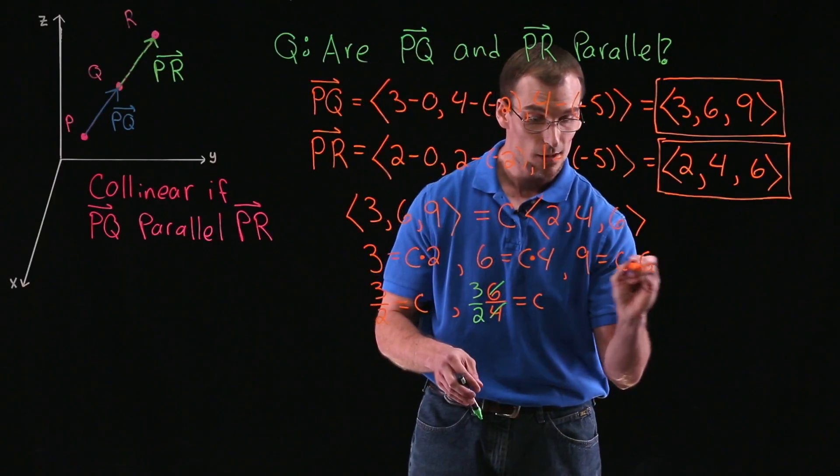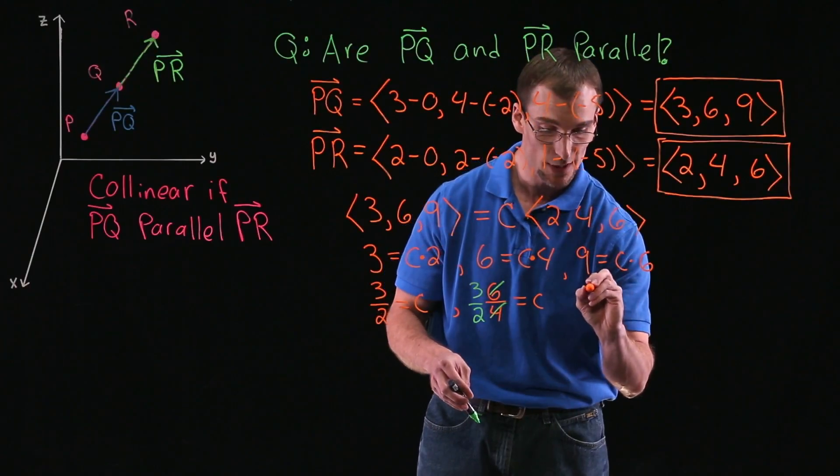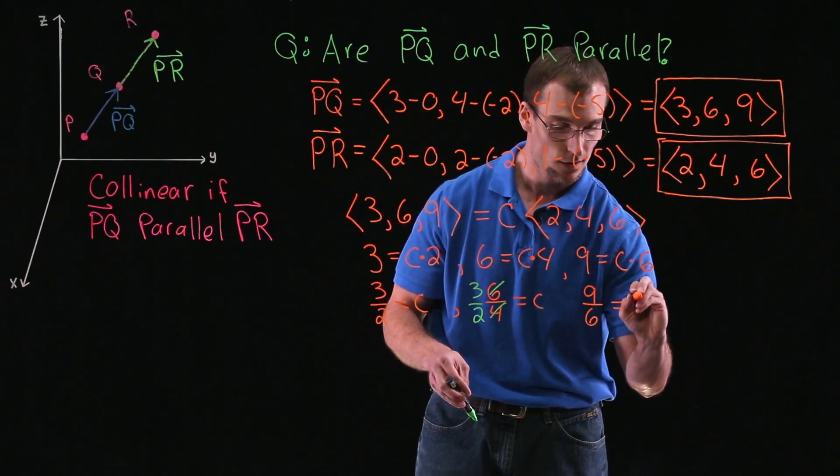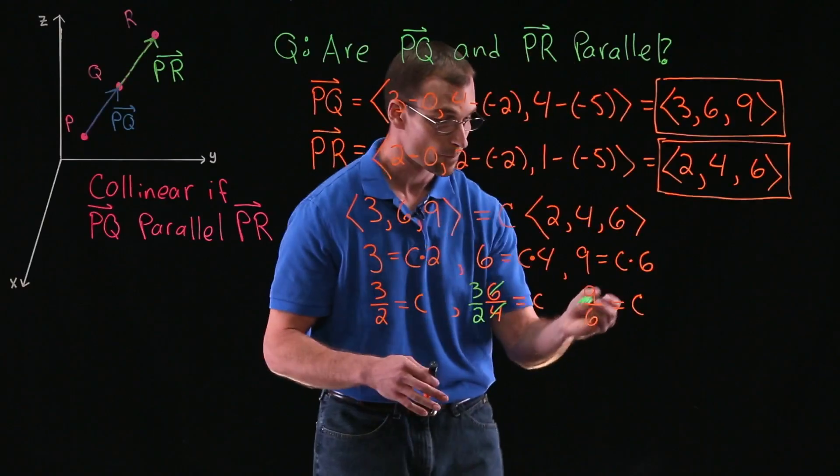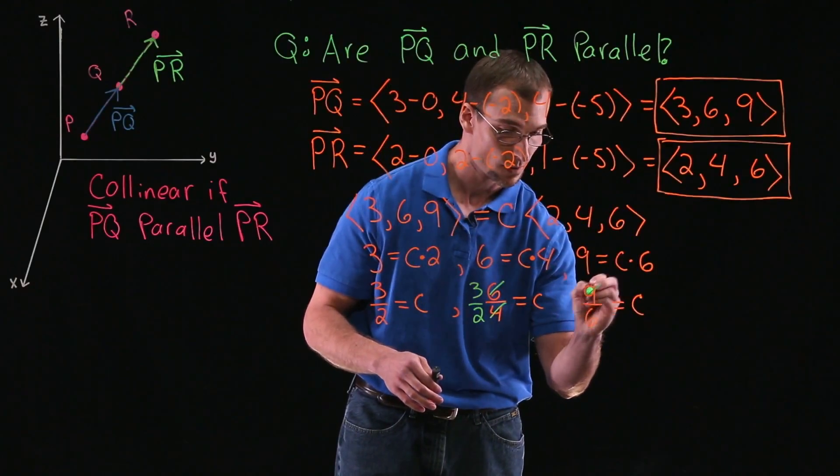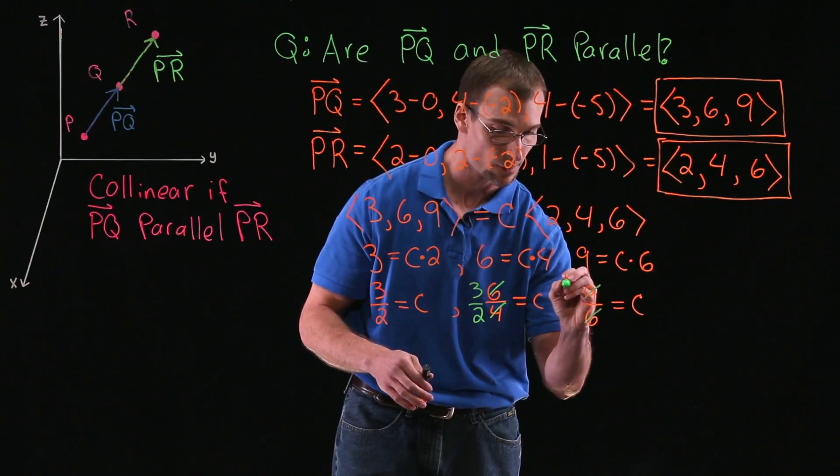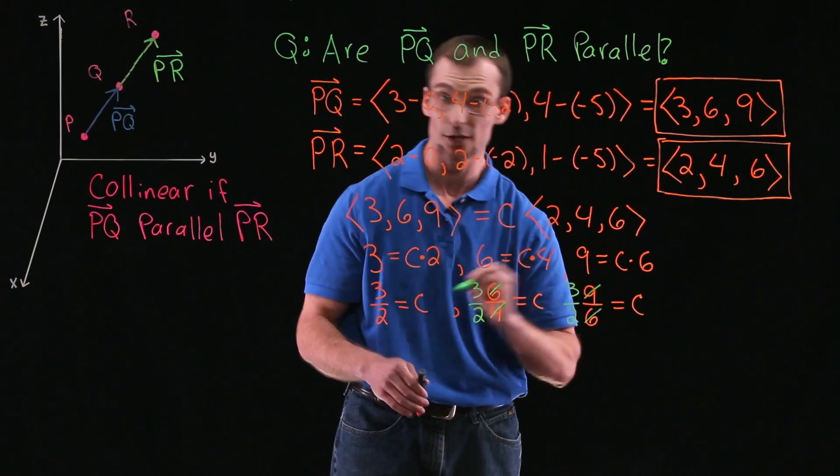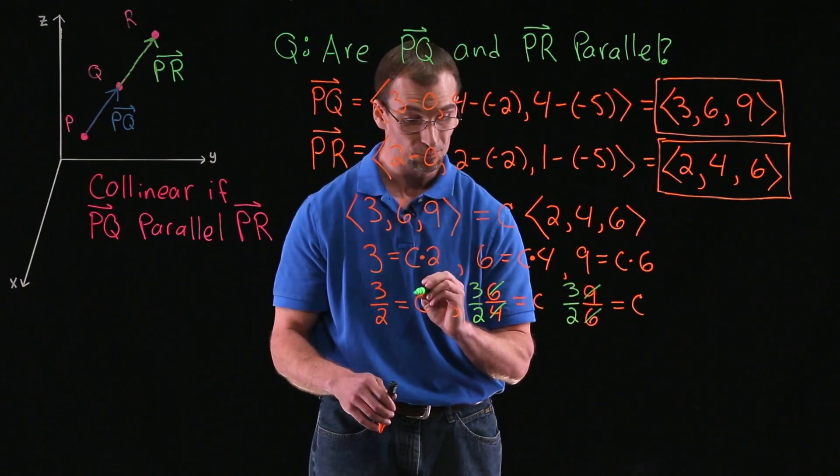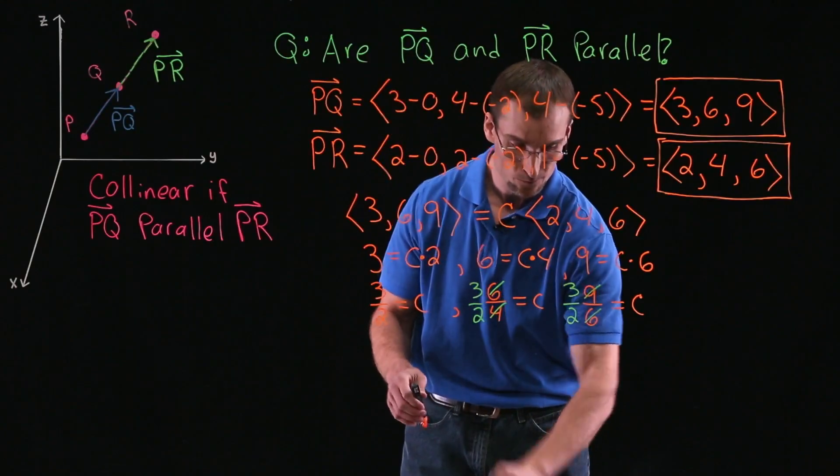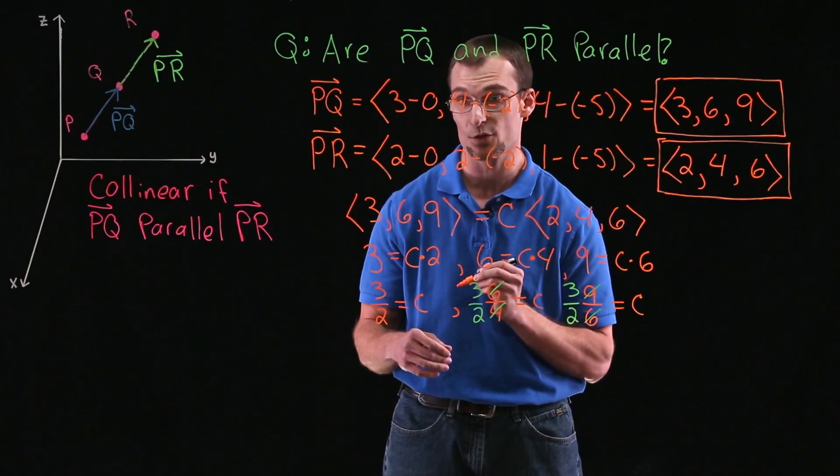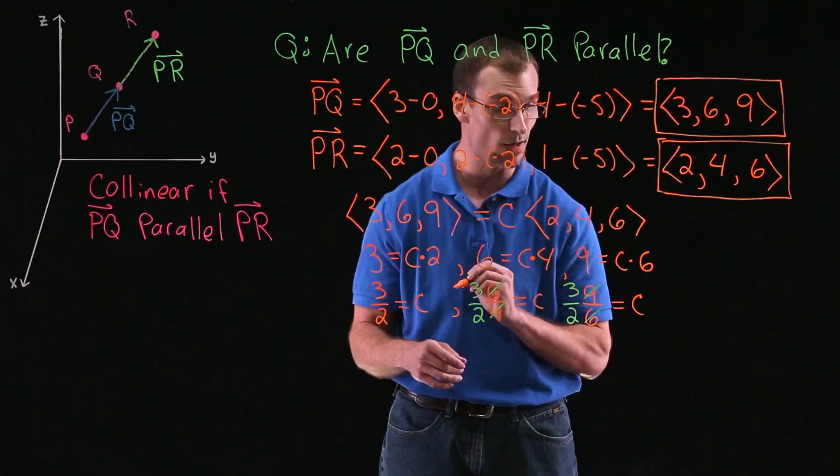And lastly, dividing the last equation through by 6, we get 9 over 6 equal to our value C. And of course, we can cancel 3 in the top and bottom. And again, we get 3 halves. So we have the same value of C for each one. And that essentially answers our question. That says that these vectors are parallel.